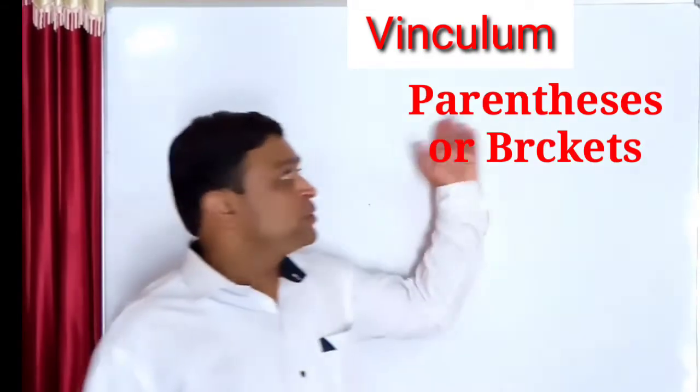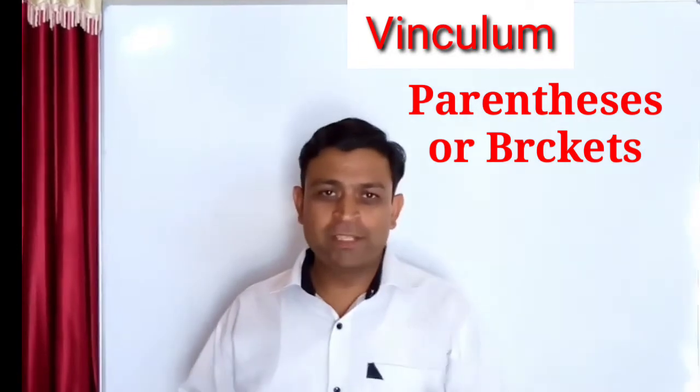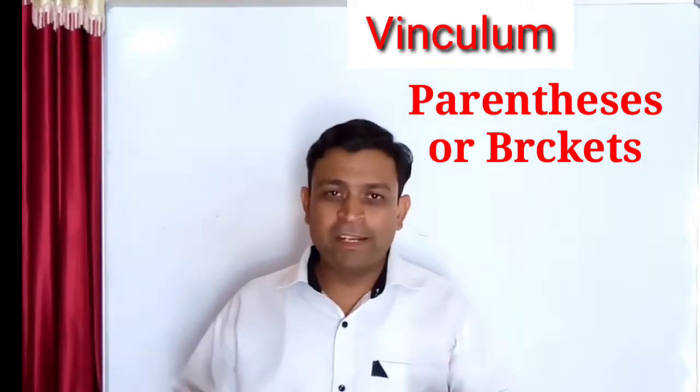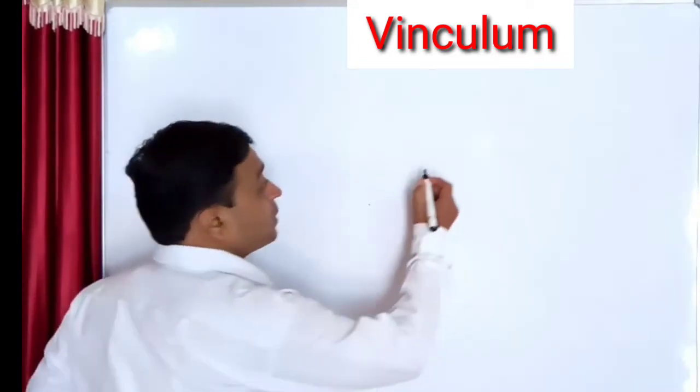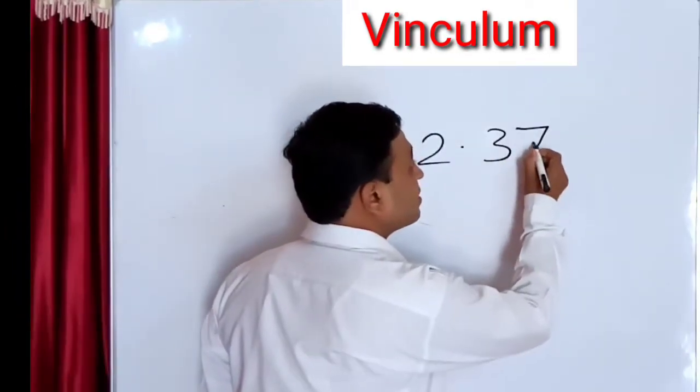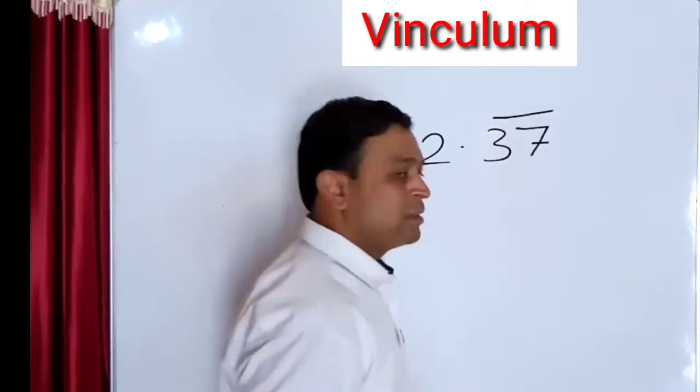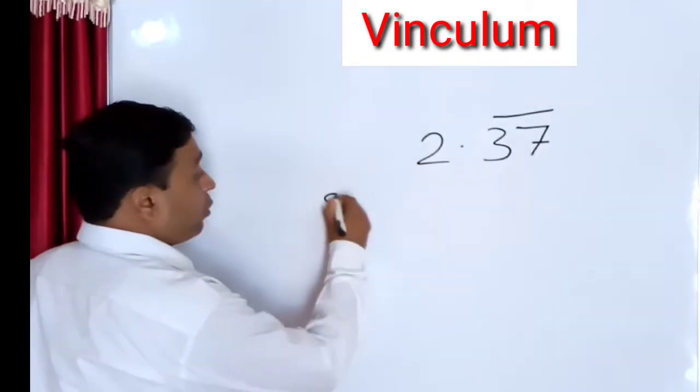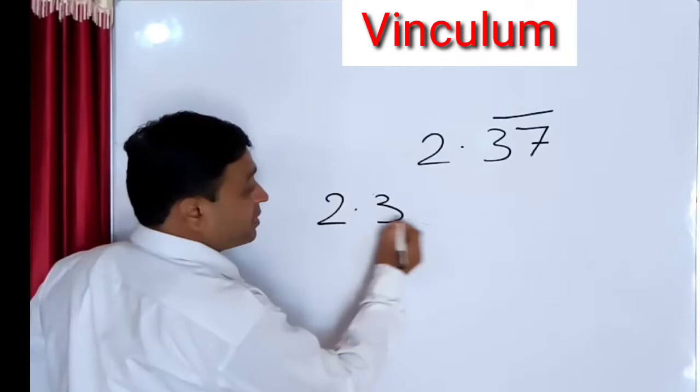But in modern days, due to the use of brackets, this concept of vinculum is used only to show the repeating decimals. For example, 2.37 with the bar on 37, that is, the vinculum sign is on 37 only.